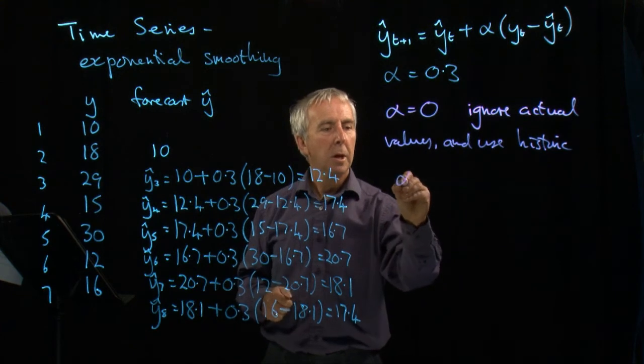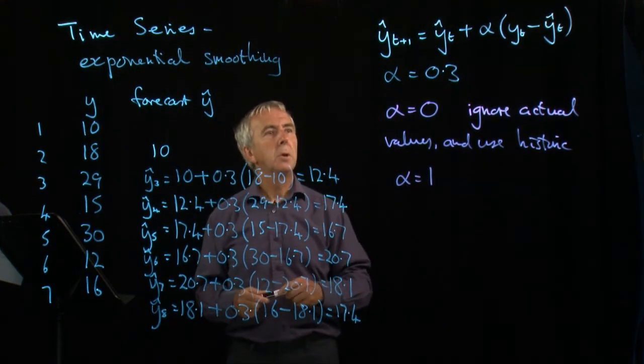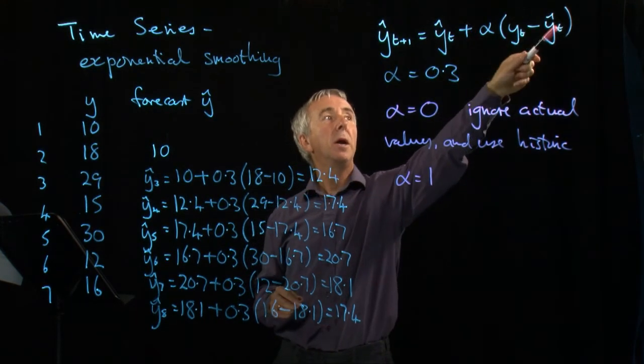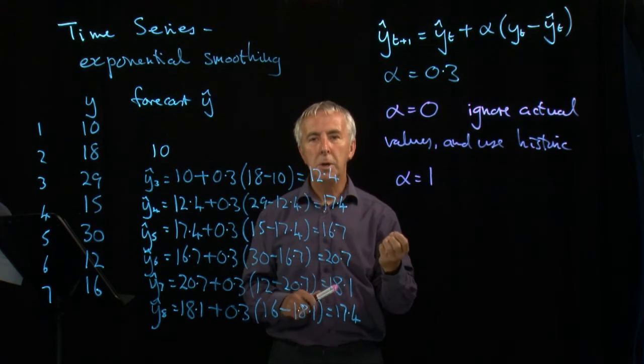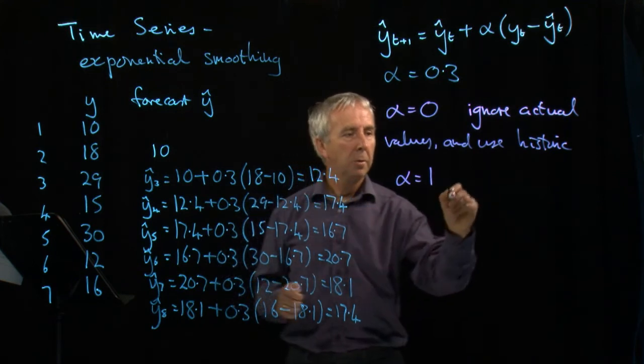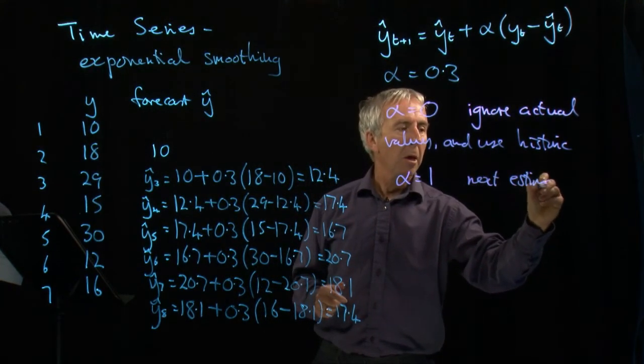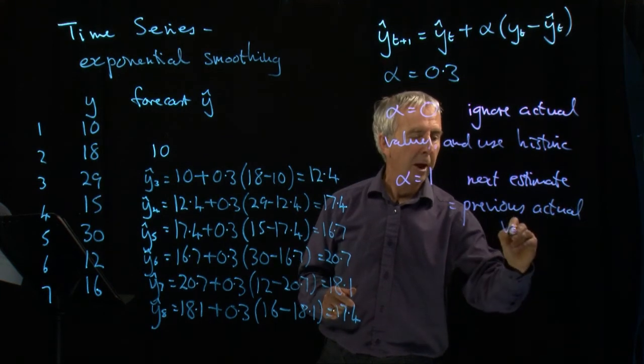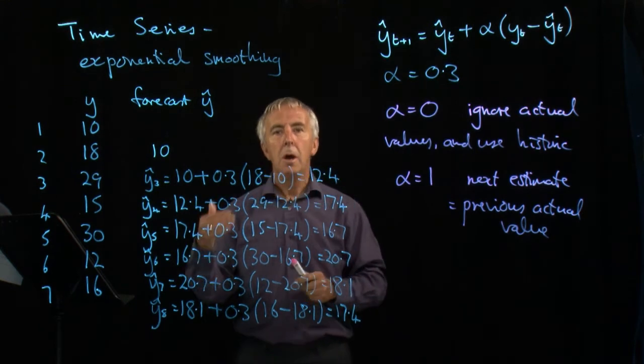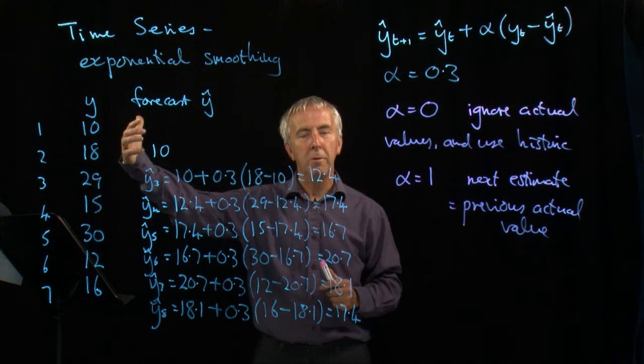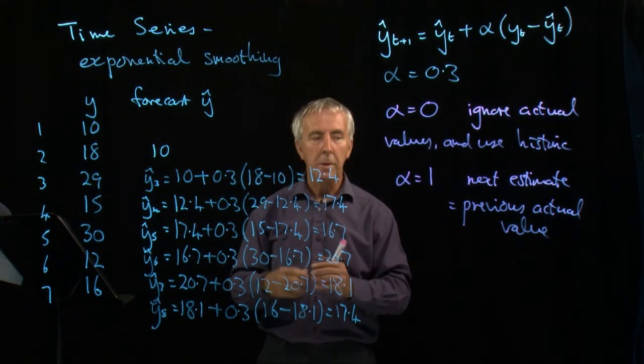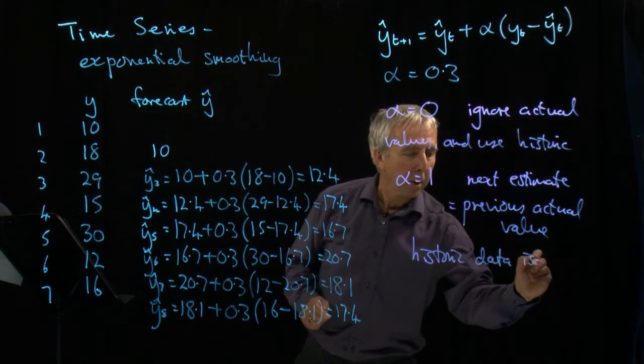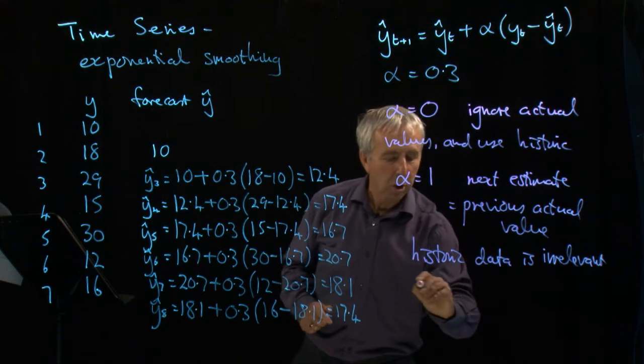The other extreme is alpha equals 1. Because if you put alpha equals 1 here and do the algebra, you get y hat of t plus yt minus y hat of t. And so in this case, the next estimate is simply the previous actual value. So here, the next estimate equals the previous actual value. So in this case, we're saying the latest values are all that matters. We're ignoring what's happened the year before, the year before that. Whatever happened last year is what we expect to happen this year. So in this case, historic data is irrelevant. We just use the latest data.